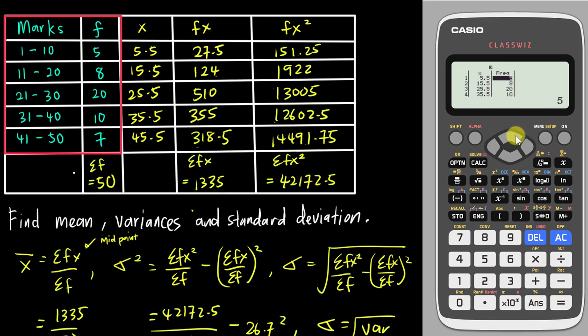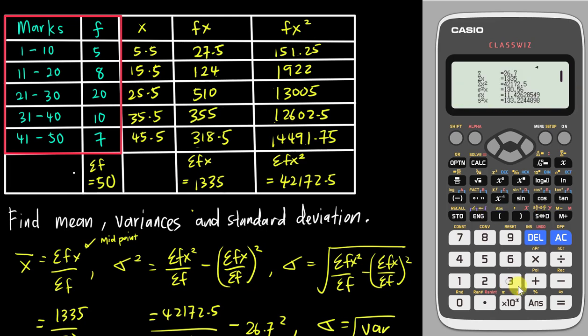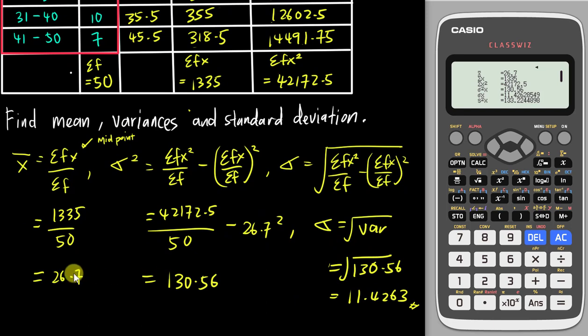After entering all data, please double-confirm everything is keyed in correctly. Then tap the Option button and select number 3 for one-variable calculation. Scrolling through the results: my mean is 26.7 — correct. My variance is 130.56 — correct. And my standard deviation is 11.4263 — also correct. This is how easily you can use the Casio 570EX calculator to verify your answers.